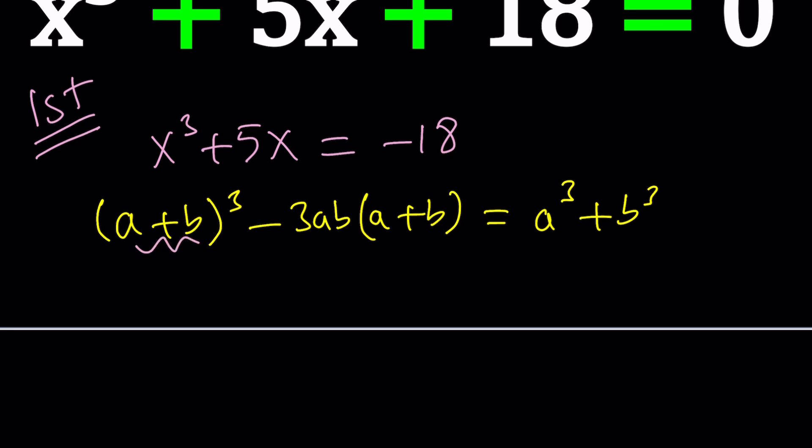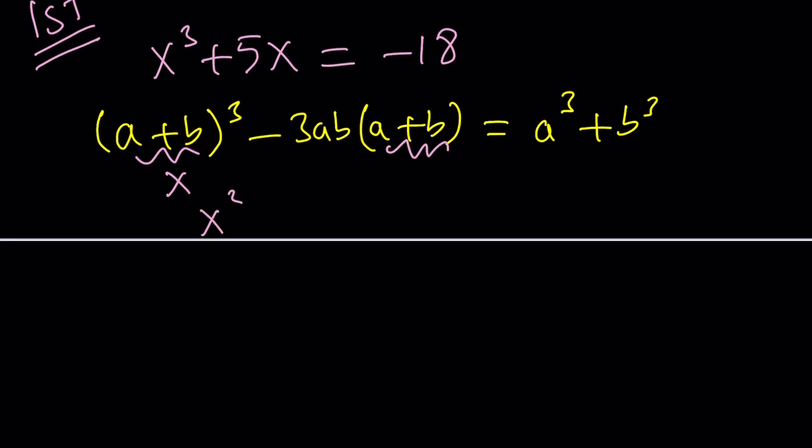We're going to focus on these two expressions. So I'm going to call this x so that we do get a cubic equation from here that looks like this: x³ - 3abx = a³ + b³.